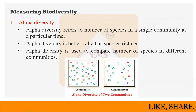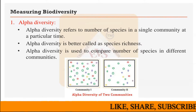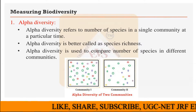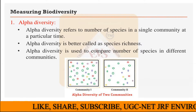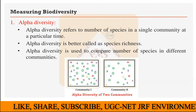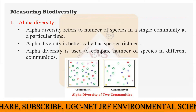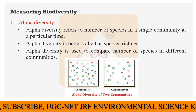How to measure biodiversity? For the measurement of biodiversity, biodiversity is divided into multiple levels — that is alpha diversity, beta diversity, and gamma diversity.